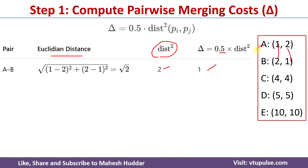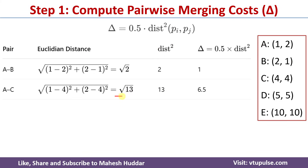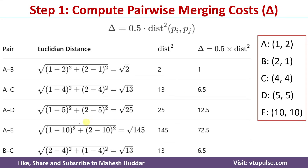The next pair is A and C. For this one, the Euclidean distance is square root of 3 and delta equals 6.5. Similarly, we need to find the merging cost for the remaining pairs: AD, AE, BC, BD, BE, CD, CE and DE.